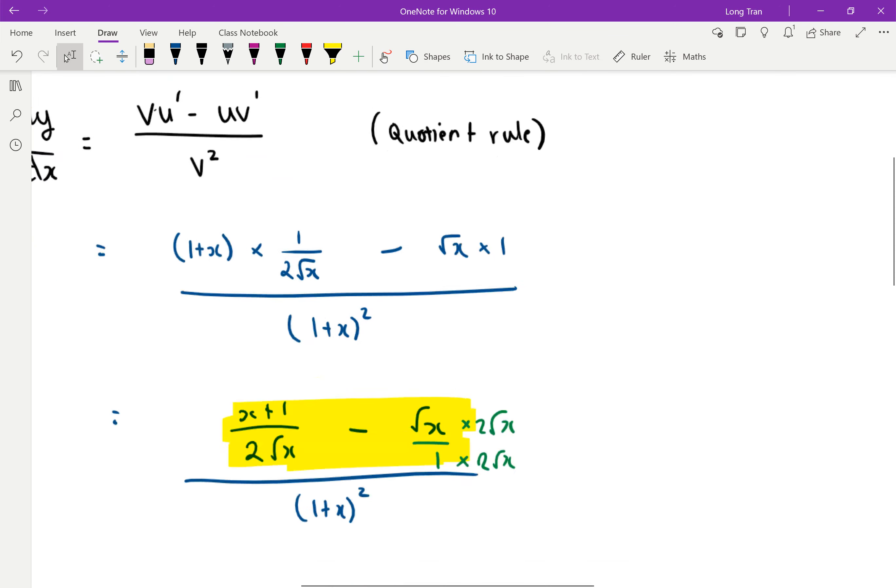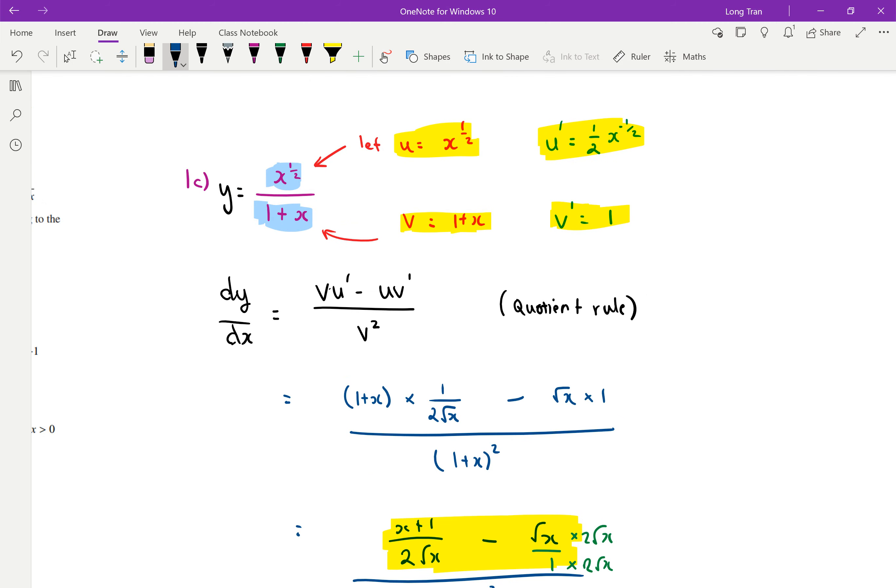Let me just double check that I've done everything right. So u is x power of half. So u dash is half x to the power of negative half, which is the same thing as 1 over 2 root x. Good.